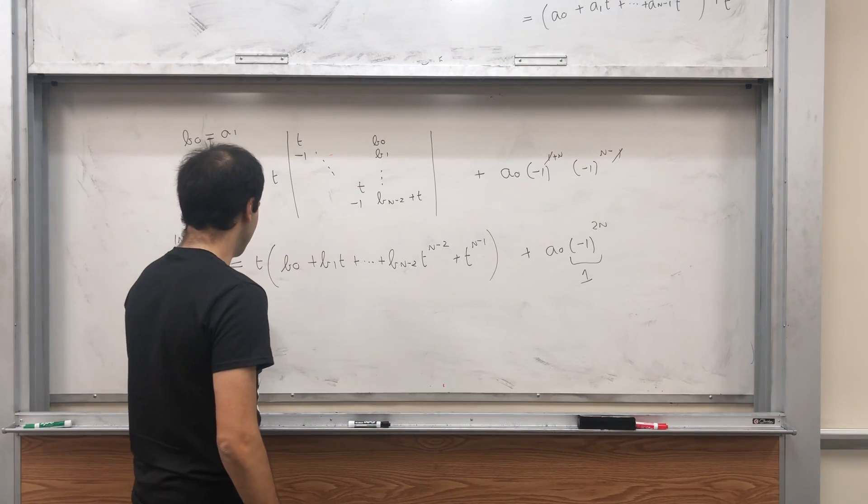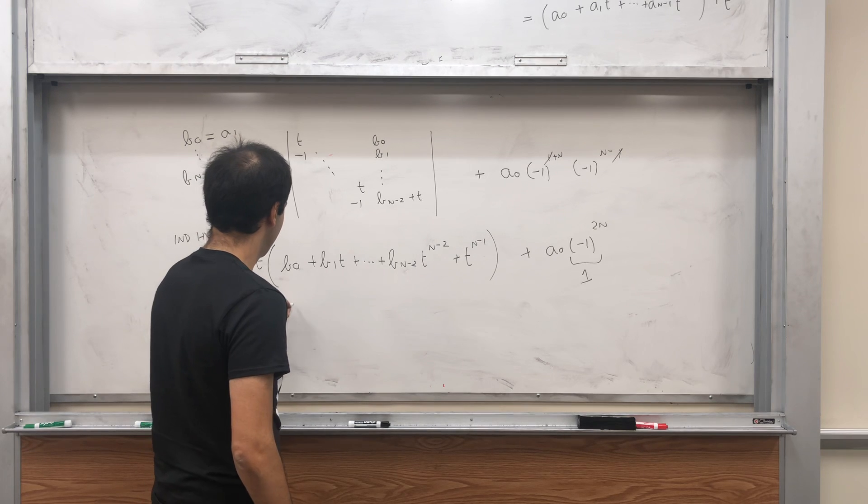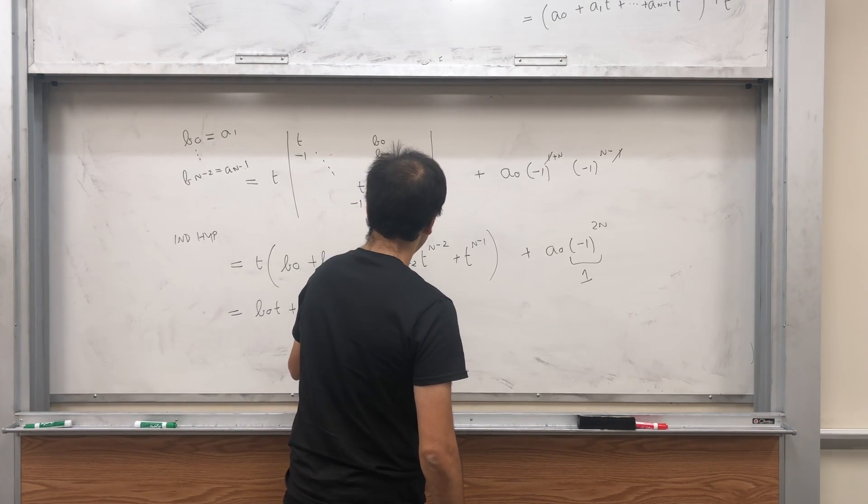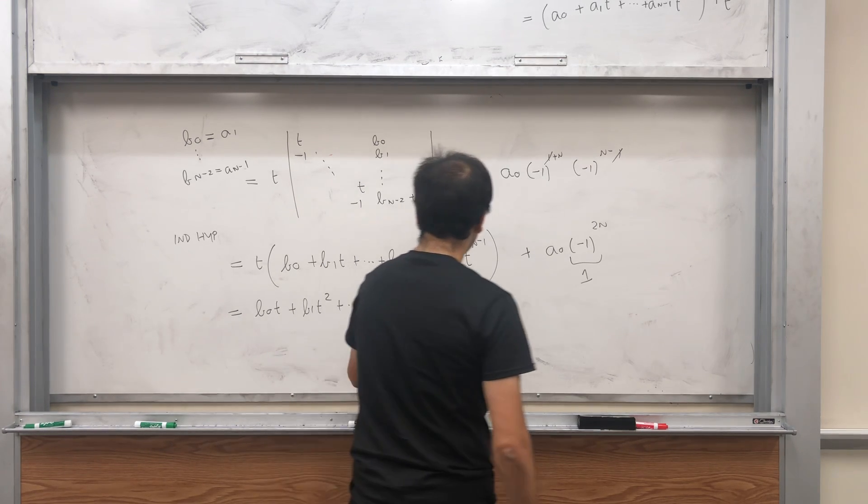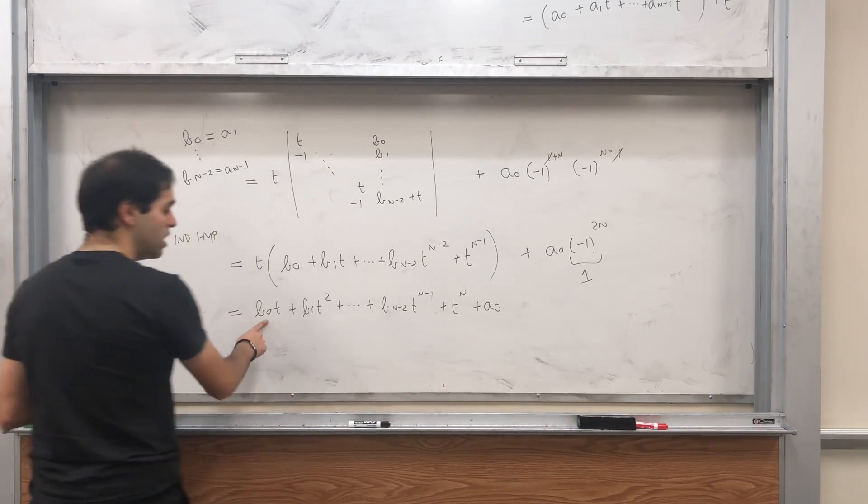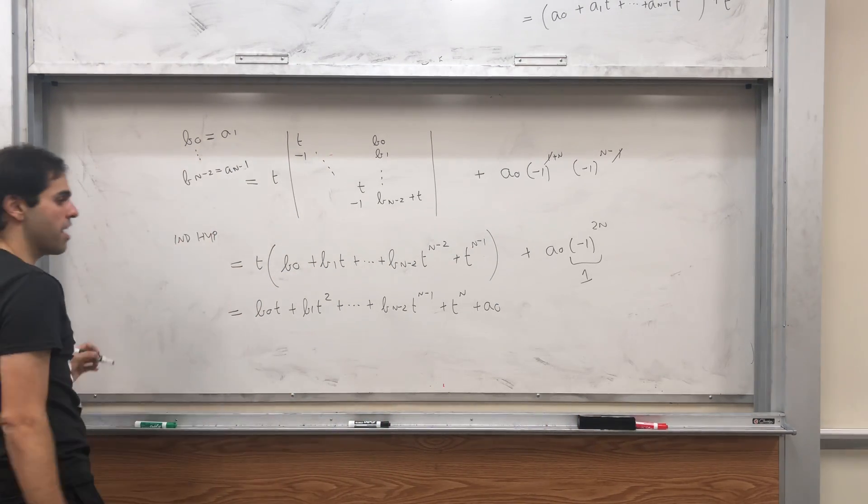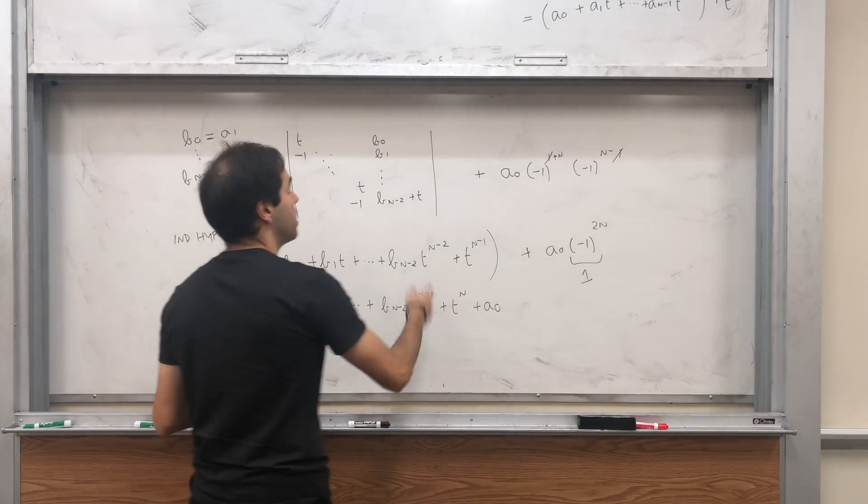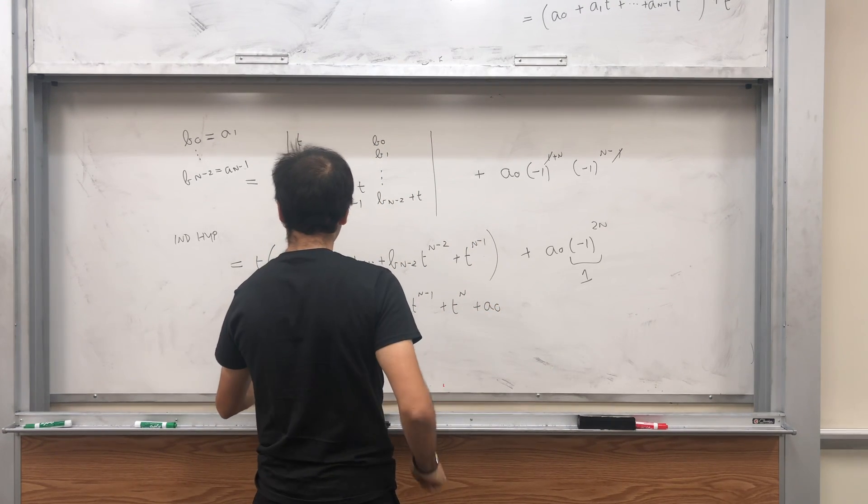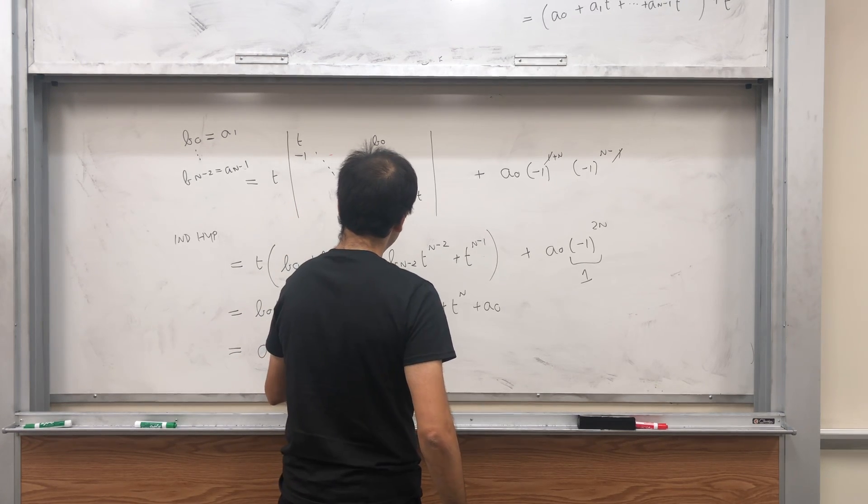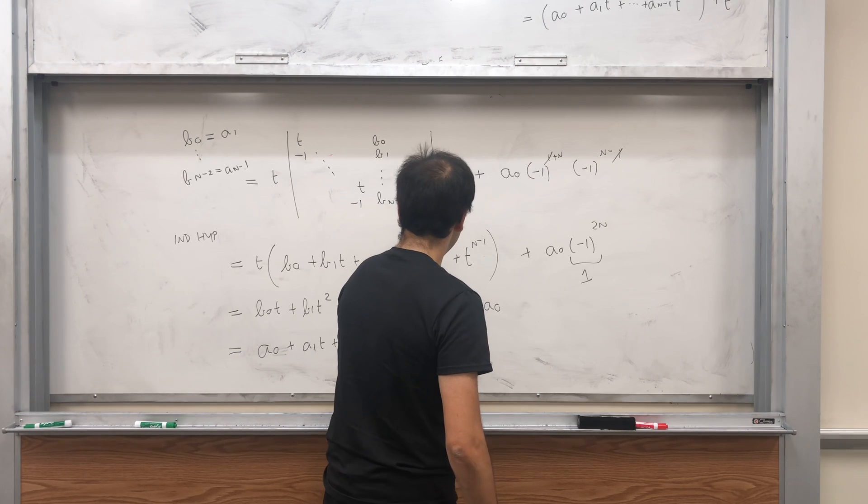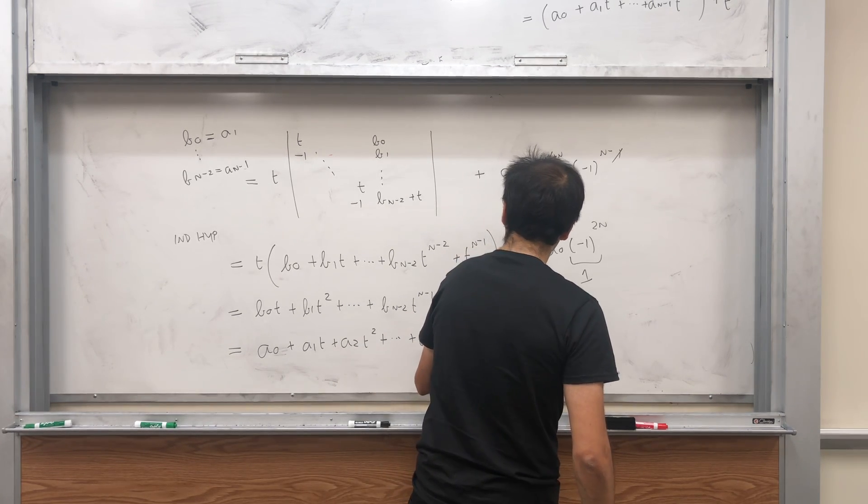And then expand this out, so B_0*t plus B_1*t^2 plus dot dot dot plus B_{n-2}*T^{n-1} plus T^n plus A_0. And now I'd like to remind you what is B_0, it's just A_1. So in the end, if we rearrange this, we get A_0 plus A_1*t plus A_2*t^2 plus dot dot dot plus A_{n-1}*T^{n-1} plus T^n, which is precisely what we wanted to show.